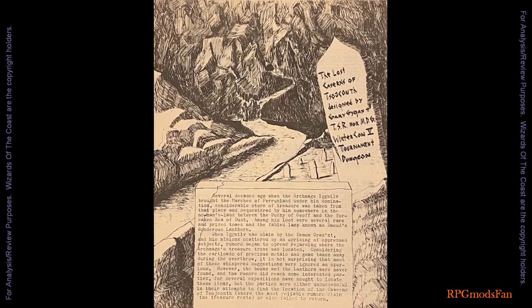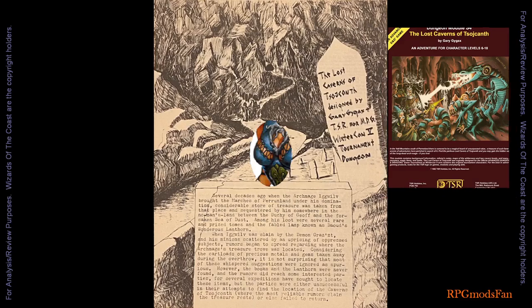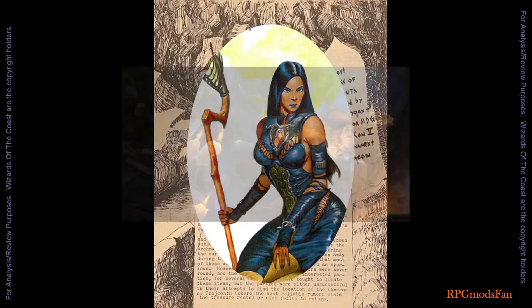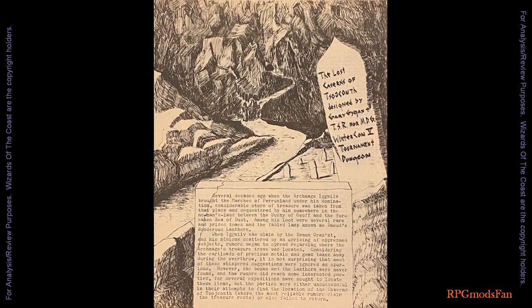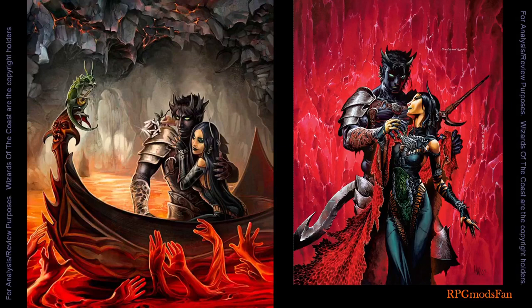One of the most significant changes is the gender swap of the century-old lore of the module. The archmage Yggvilv, who conquered and once ruled Perenland, was originally a male human. In the S4 module, Yggvilv became a she. She then became an iconic D&D villain who has appeared in every edition of D&D and is known by many aliases, including being known as the archmage Tasha. In the original version of the module, the male Yggvilv was rumored to have been slain by the demon prince Grest. This event has been retconned, and instead Yggvilv and Grest became lovers.